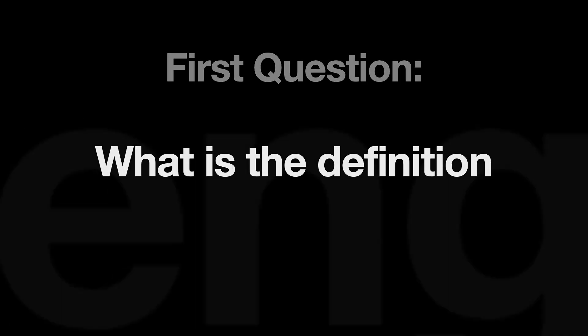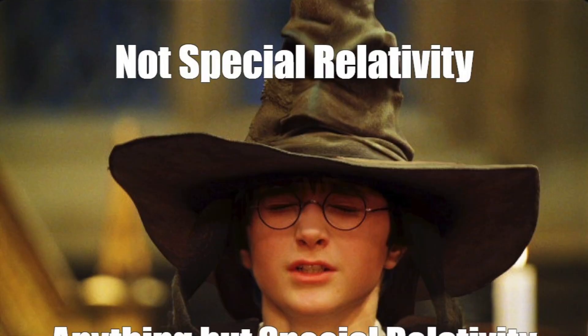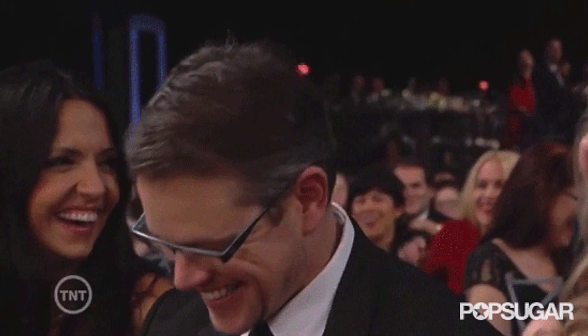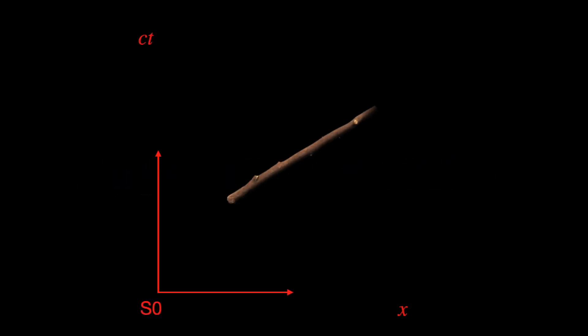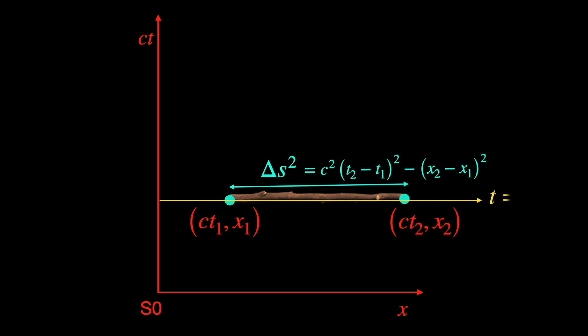So the first question we should ask is what is the definition of length of an object? Sure, we all intuitively understand what length is but in relativity whenever you take this 'oh this is obvious' attitude you'll run into trouble so we better be thorough. The length of an extended object in relativity is defined using the space-time interval between the two endpoints of that object when they are being observed simultaneously.